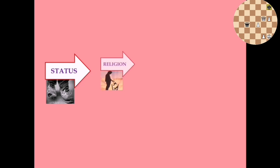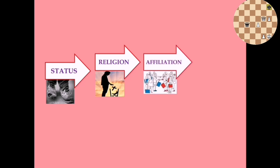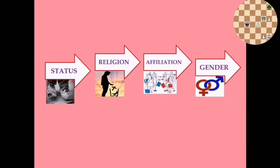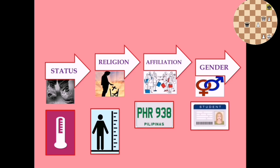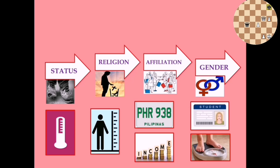Let's consider more examples of data. We have the socioeconomic status of a person, religion of an individual, political or school affiliation, gender, body temperature of a COVID patient, height of a basketball player, plate number of a politician, student ID number, salary of a worker, and weight of an athlete.